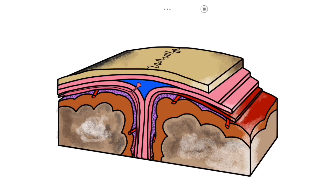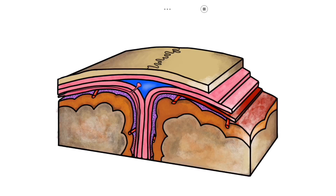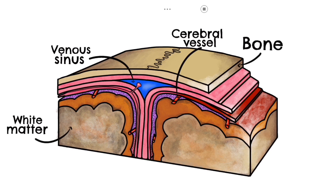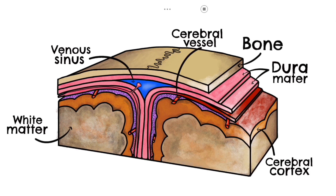Now we're going to take a look at this coronal section through the meninges. Note the position of the cerebral vessels and the superior sagittal venous sinus, and also the white matter, the bone of the scalp, and the cerebral cortex. Here you can see the outer dura mater, which itself is formed of two layers and sits beneath the bone of the scalp.